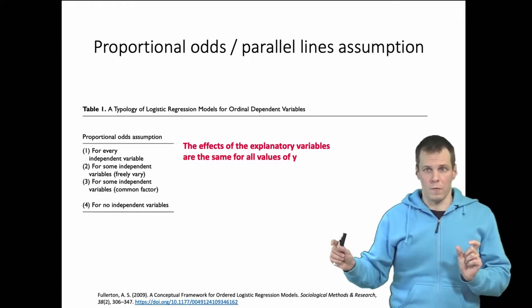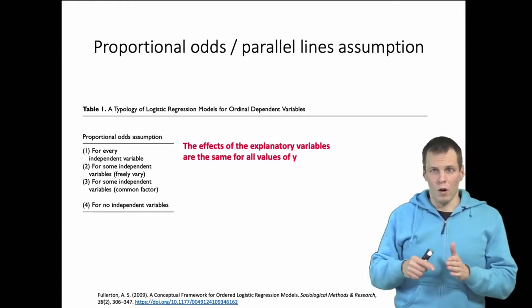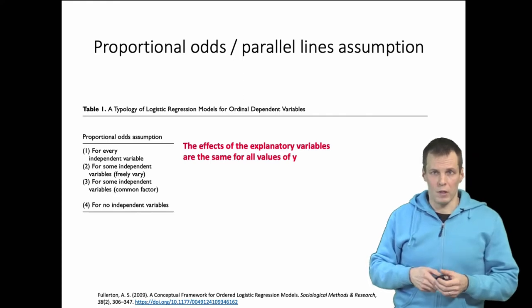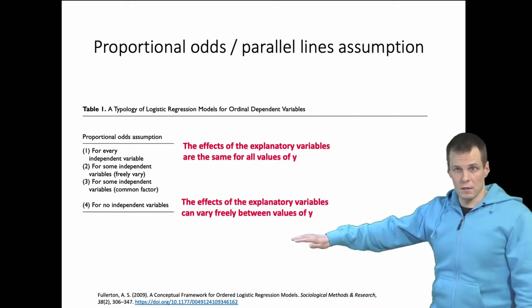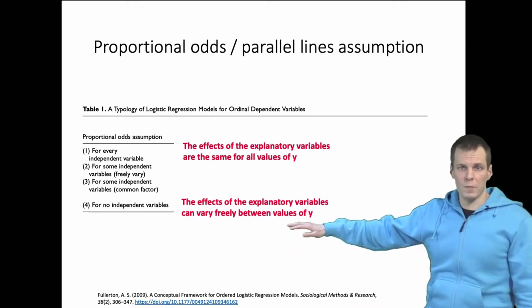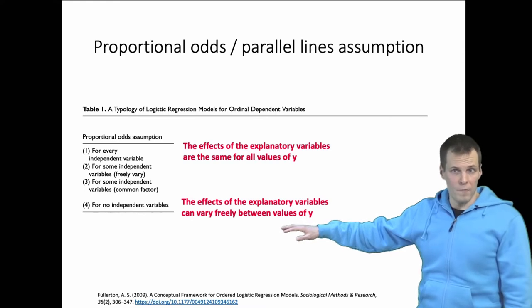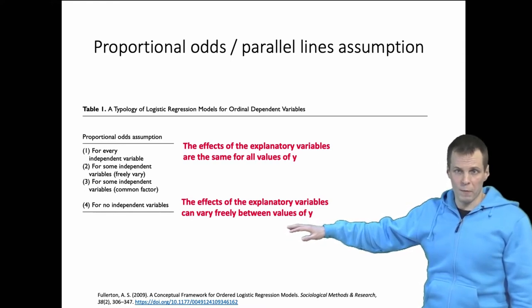That explains all values of the dependent variable or all categories of the dependent variable at the same time. Then we have the least constraining, so the effects of the explanatory variables can vary freely between values of y.